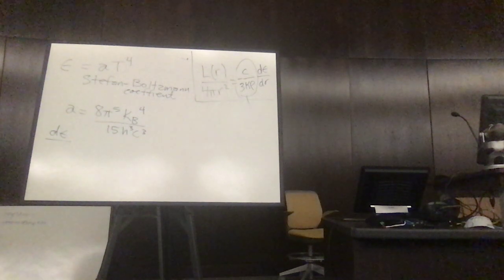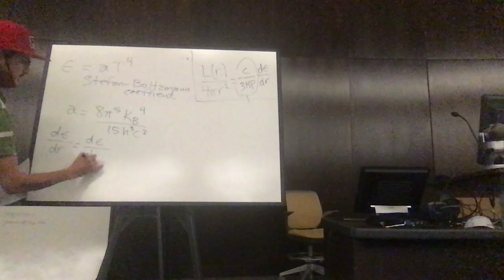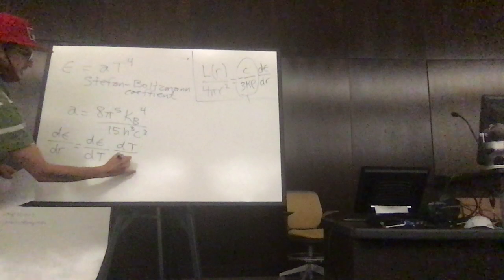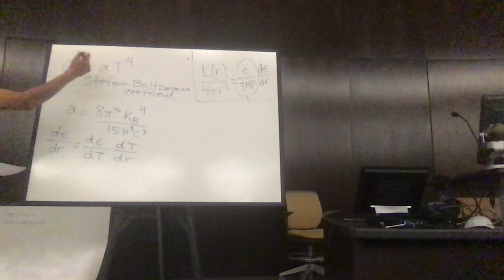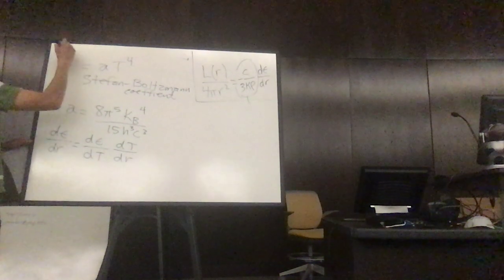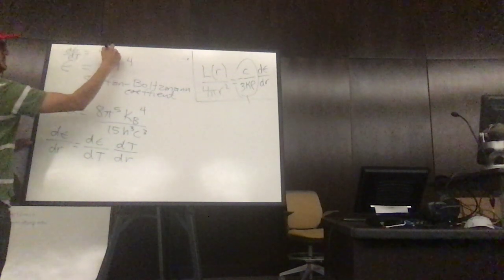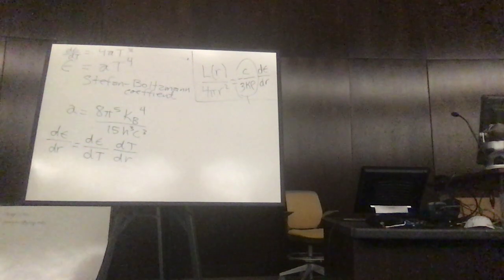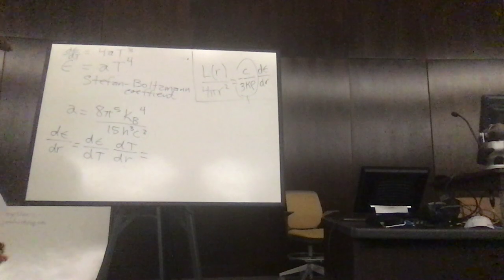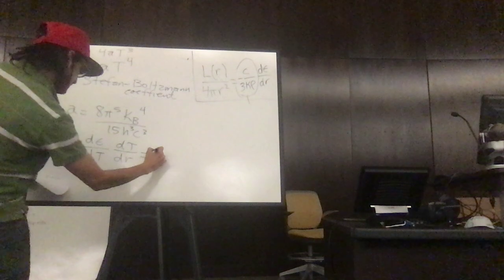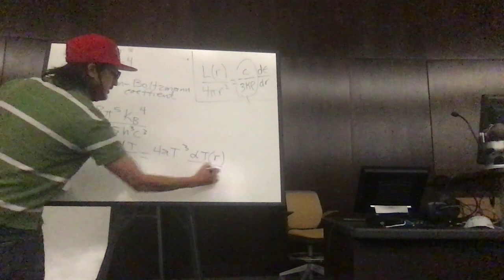Alright, so dE/dr is dE/dT times dT/dr. So this one we can get, this is going to be, so then dE/dr now in terms of the temperature, as I promised last time, the temperature is 4a dQ/dT, which is a function of r, dr.